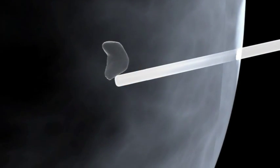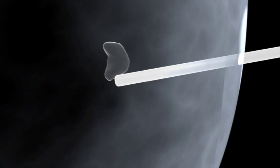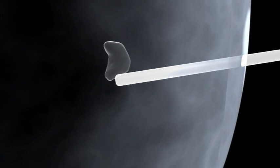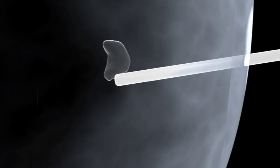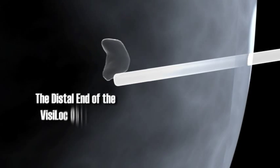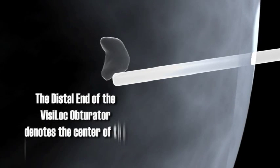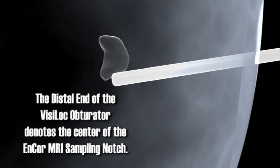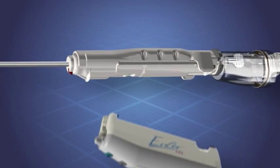Once the Viziloc obturator is in place, the patient is re-imaged. The resulting images should provide confirmation of precise targeting. The distal end of the Viziloc obturator denotes the center of the Encore MRI sampling notch.